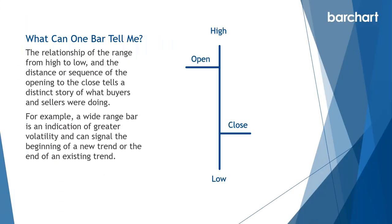So what can one bar tell me? The relationship of the range — the high and low — and the distance or sequence of our opening to our close can tell us a very unique and distinctive story as to what buyers and sellers are doing. For example, a wide-range bar, a bar that has a large price movement from high to low, is an indication of greater volatility. This could be a sign that we're about to see the beginning of a new trend or the end of an existing trend.